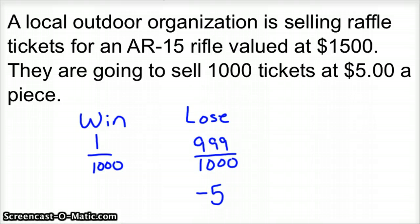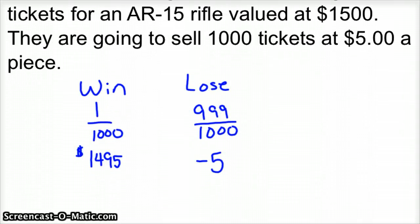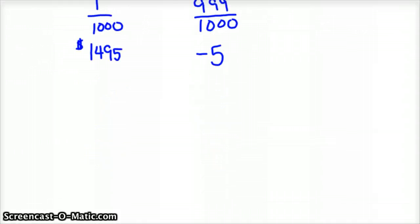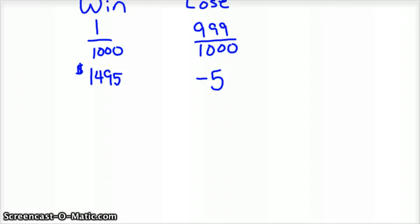But since we've already invested five bucks into this investment, we are going to win a $1,500 gun, we could potentially win $1,495. If you look at my mean probability distributions, that's essentially what we're going to do now to get the expected value. Since it's expected value, we use a capital E for that.